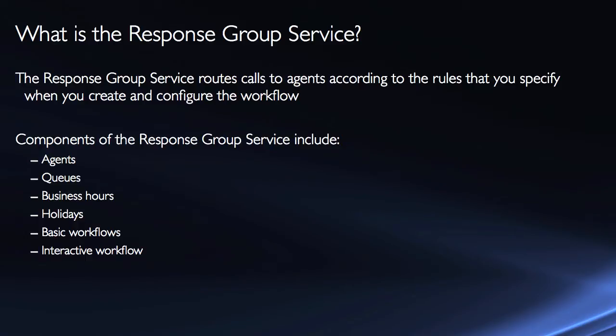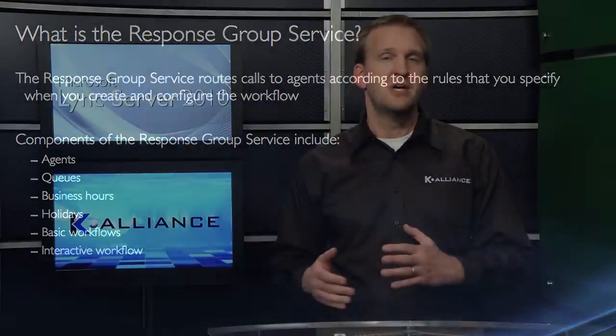The components of the response group service include agents — these are the individuals who we decide are the ultimate recipients of the phone call, the members of the group. We also have queues. Certain calls can fall into queues and wait there as part of the workflow, so if nobody picks up the phone, it doesn't just end or dump them into voicemail.